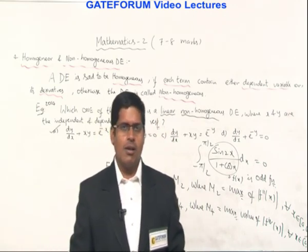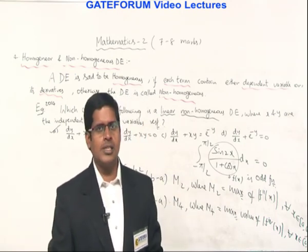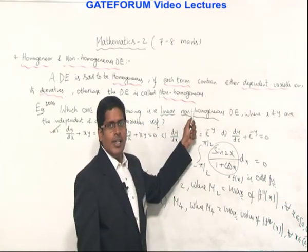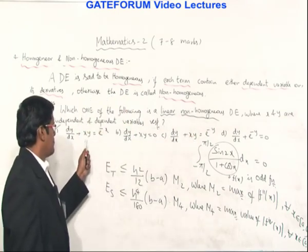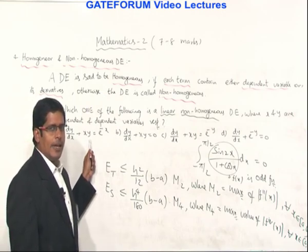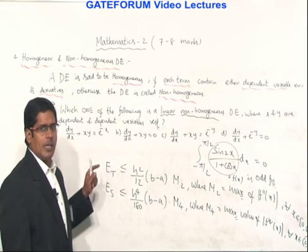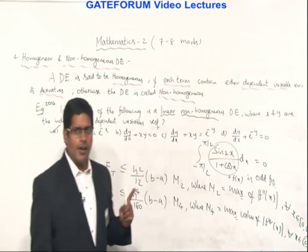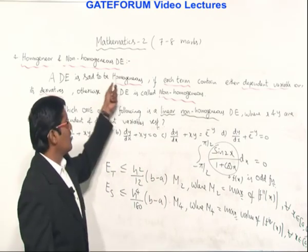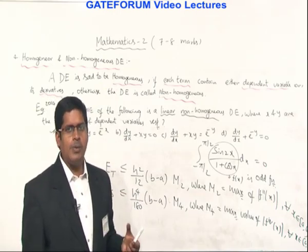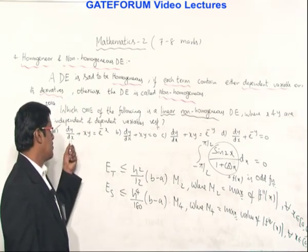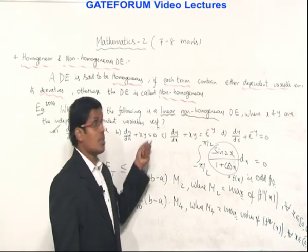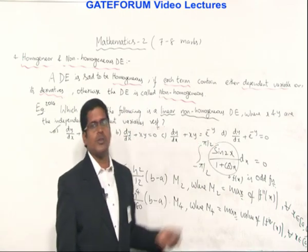A student asks for a repeat on the linear/non-homogeneous classification. For option A to be linear, the dependent variable and all derivatives must have degree 1, and no two such terms are multiplied. For homogeneous/non-homogeneous: every term must contain the dependent variable or its derivative. In option A, e^(−x) is an independent variable term, so option A is non-homogeneous. Option B is homogeneous; options C and D are also homogeneous.